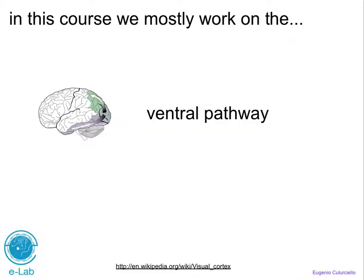In this course, we mostly focus on the ventral pathway — the pathway of what kind of objects — because we're interested in understanding scenes in the context of what is in the scene. Nevertheless, both pathways occur and processing happens at the same time, and both are mixed together to report our visual experience, so we should not neglect the second portion, but we'll start with the ventral pathway.